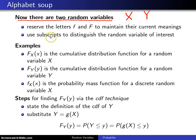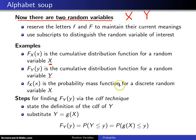We are going to use subscripts to distinguish the random variables of interest. For example, if you see capital F with a subscript X, you're dealing with the CDF of the random variable X. If you see capital F subscript Y, you're dealing with the CDF of the random variable Y. And if you see little f with a subscript X, you're looking at either the probability mass function, if it's a discrete random variable X, or the probability density function, if it is a continuous random variable X.